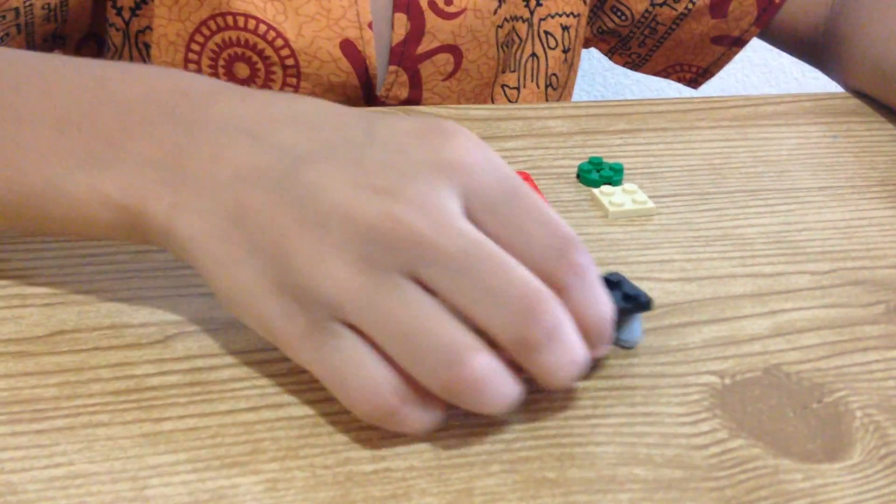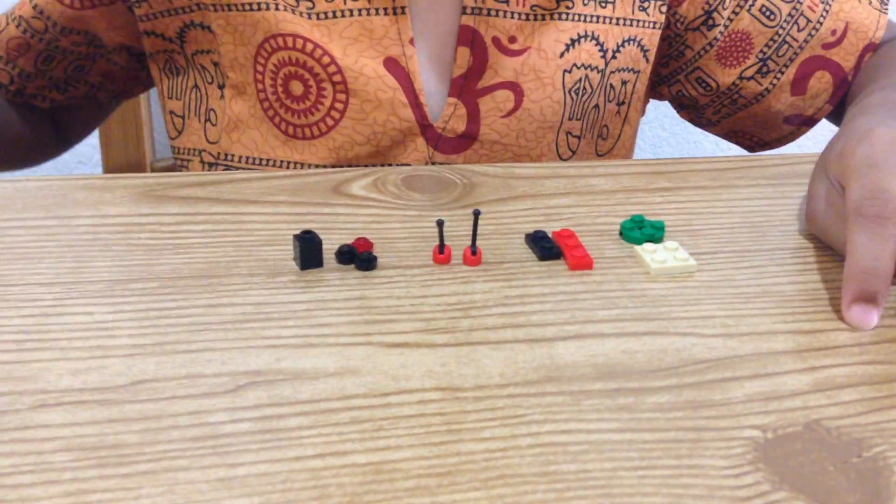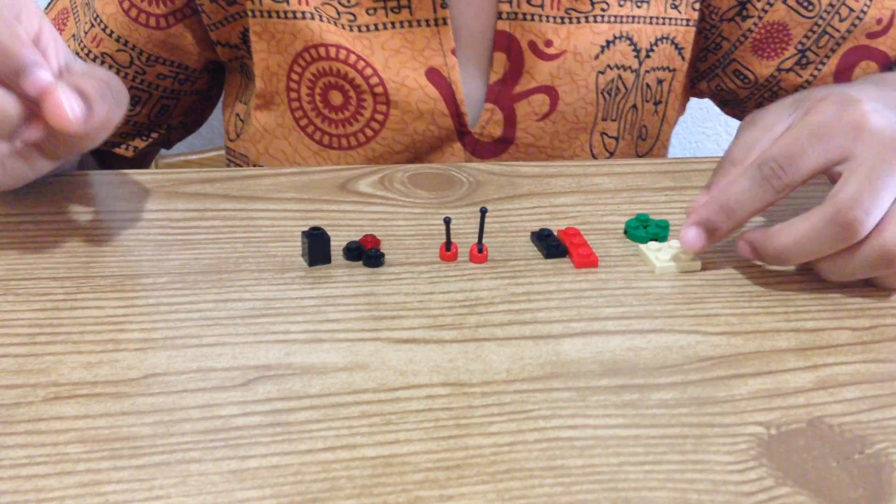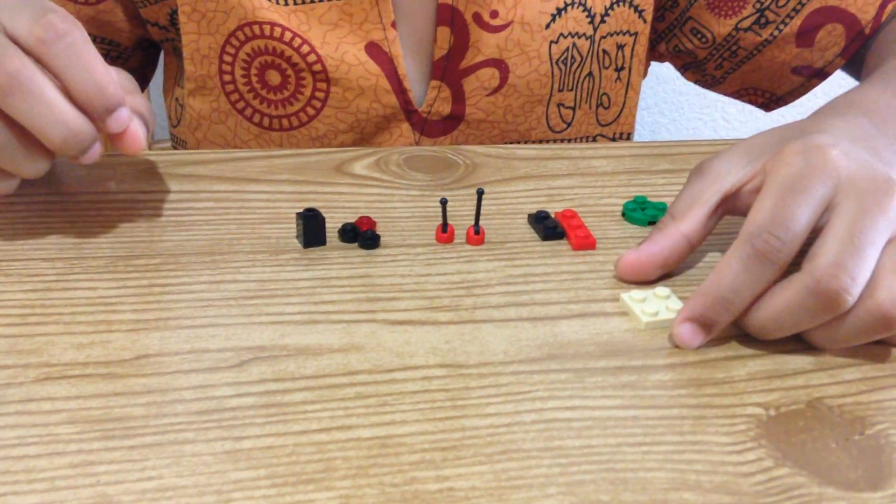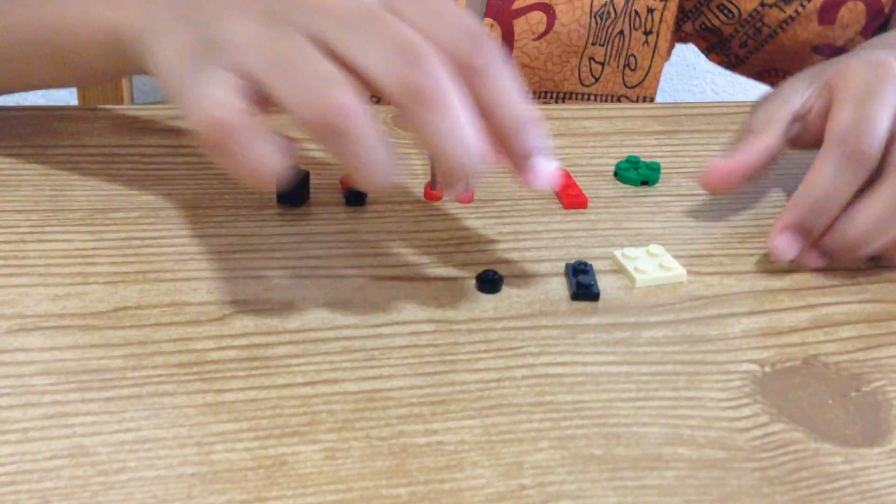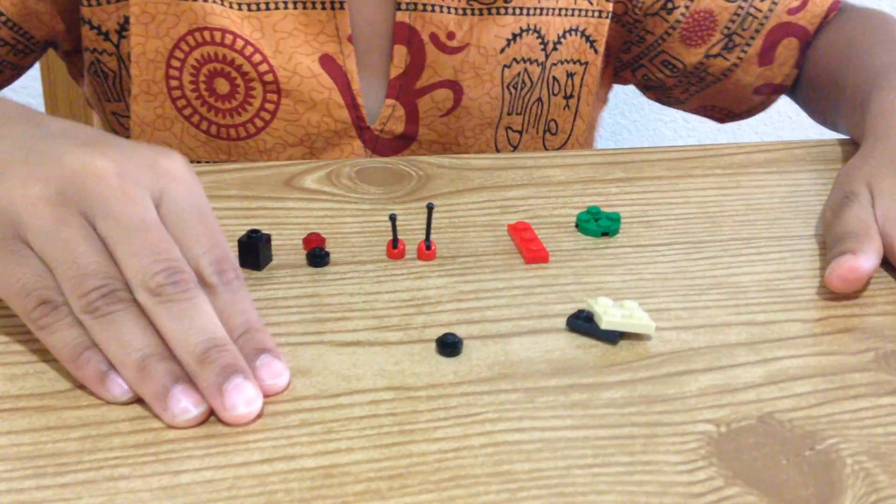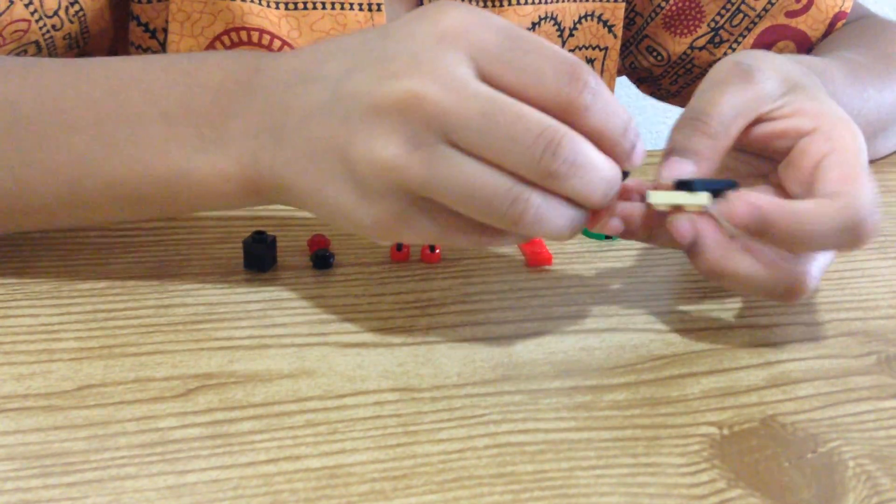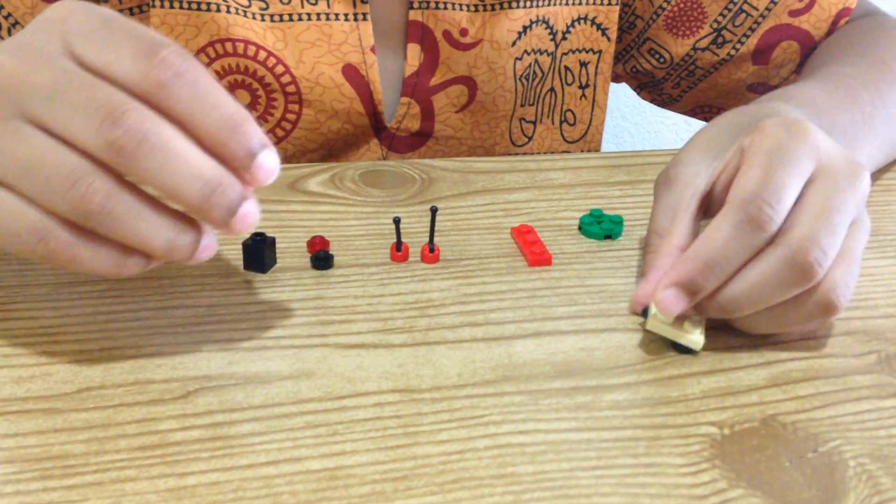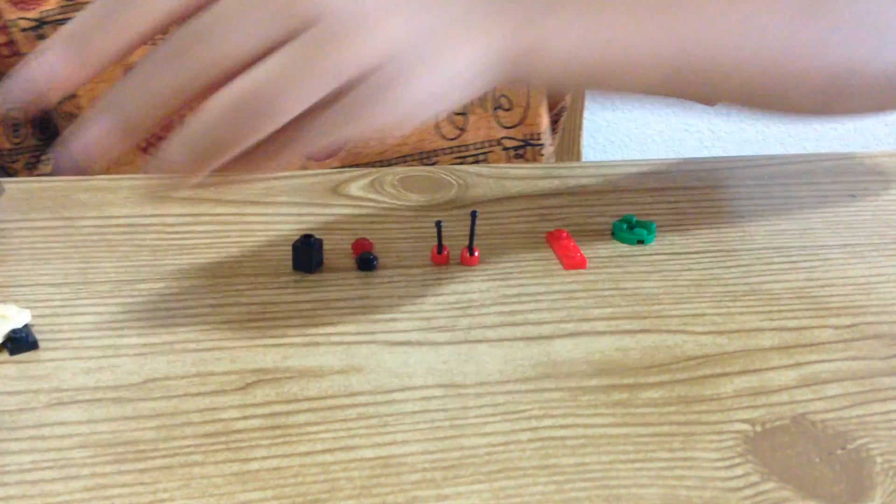So let's keep this aside and make the body. Let's take this plate with this piece. Let's add this piece like this, like that. And then add this piece just like that. Let's keep this aside too.